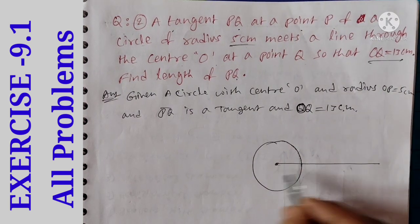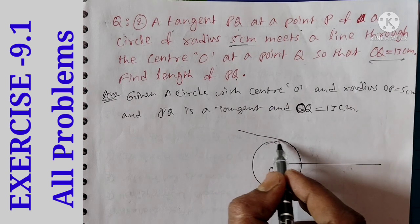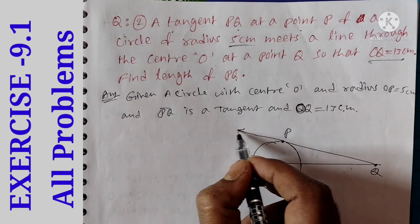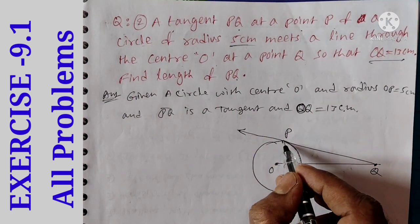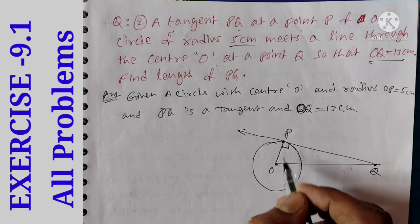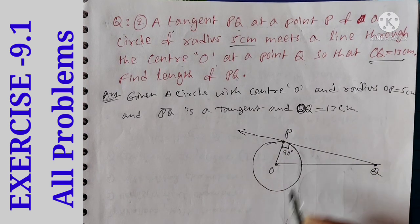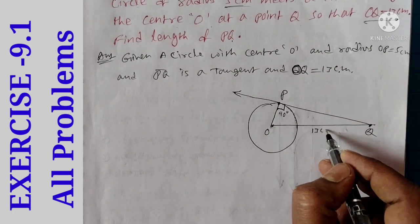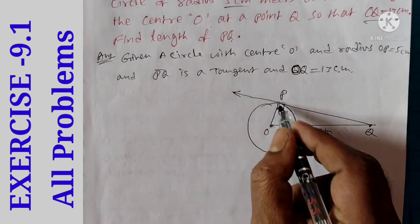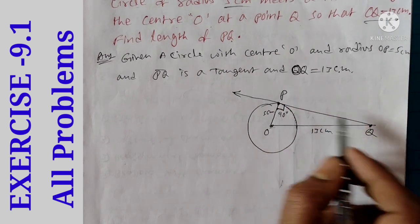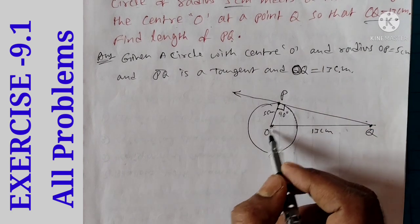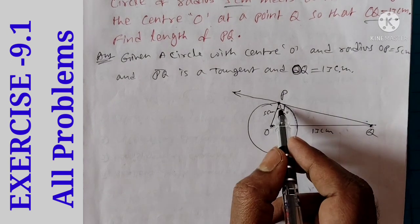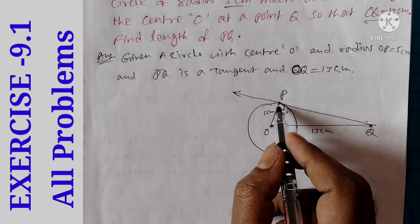We draw a circle here. The center is O. We draw a tangent here. This is Q point, this is P. Tangent is always perpendicular to the radius — so this is 90 degrees. OQ is equal to 13 cm, the radius OP is 5 cm, and the length of the tangent is PQ. Triangle OPQ is a right angle triangle. OQ is the hypotenuse, PQ is the base, and OP is the height.